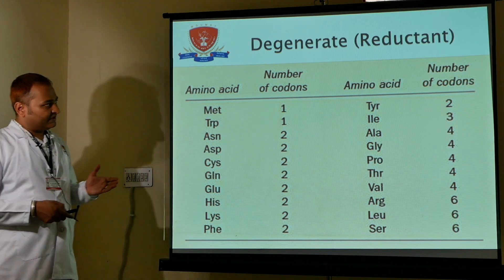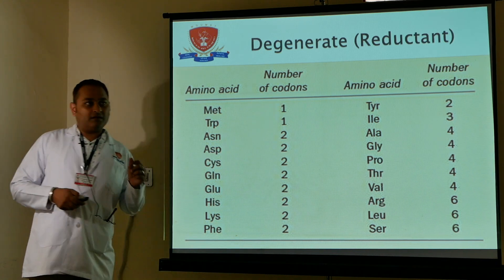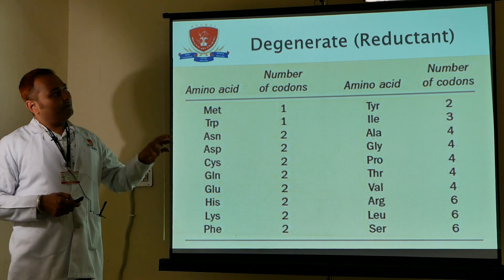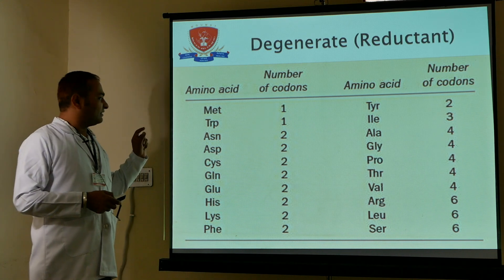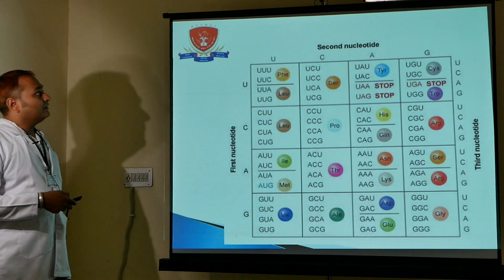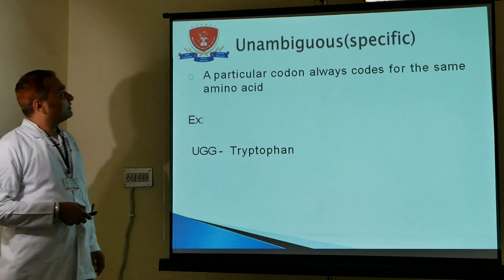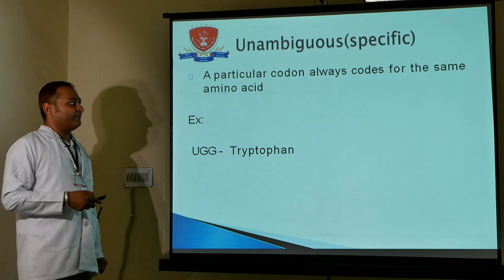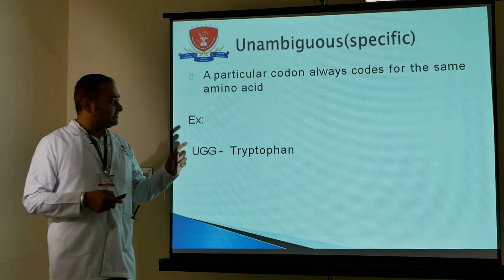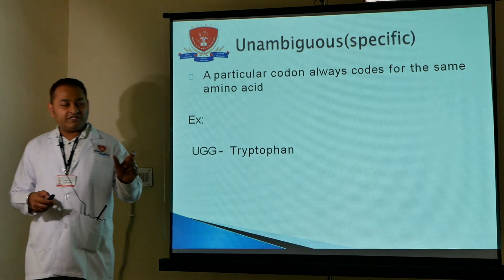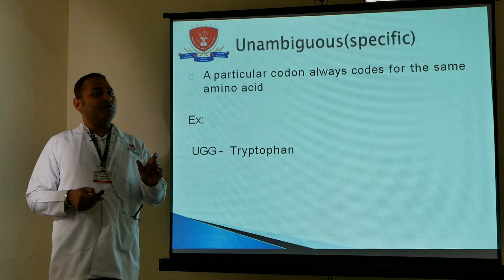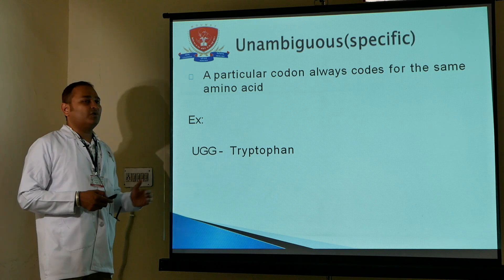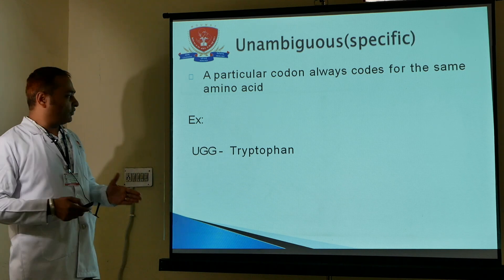Degeneracy means one amino acid can be coded by multiple codons. Unambiguous means a particular codon always codes for the same amino acid — this is a very important point. While one codon codes for one particular amino acid, one amino acid can be coded by multiple codons.